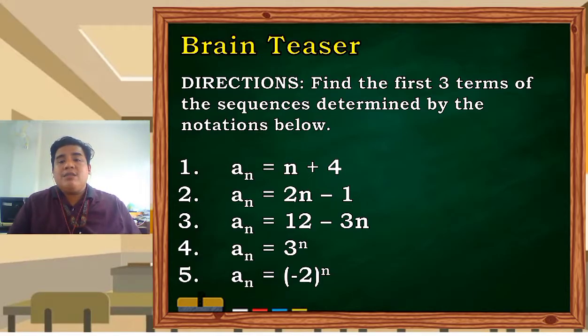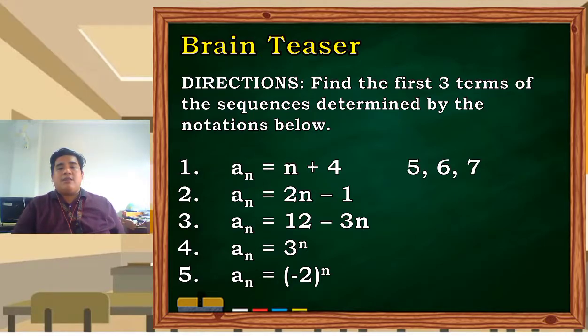1, 2, and 3 to n to find the first 3 terms. For number 1, our answer will be 5, 6, and 7. Why? Let's say we substitute 1 for n, so that is 1 plus 4, it will be 5. And then number 2: 2 plus 4, that is 6. And then 3 plus 4, that is 7. Same with what we'll do for the second one.